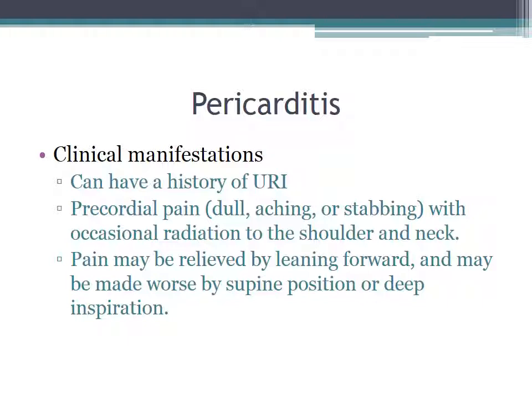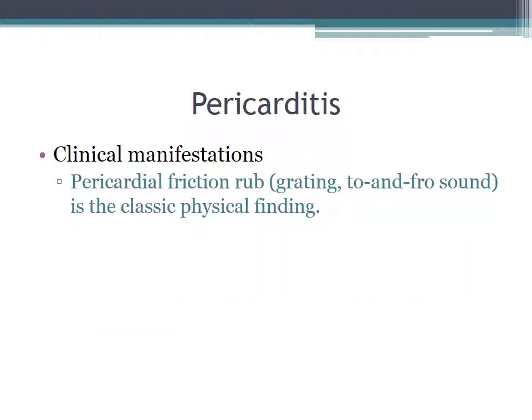It's important to have this picture in your mind of how the typical patient with pericarditis presents. They'll typically be leaning forward, looking uncomfortable, taking shallow breaths. The classic clinical manifestation in pericarditis is this pericardial friction rub — a grating to-and-fro sound, often triphasic, and that's the classic physical finding.